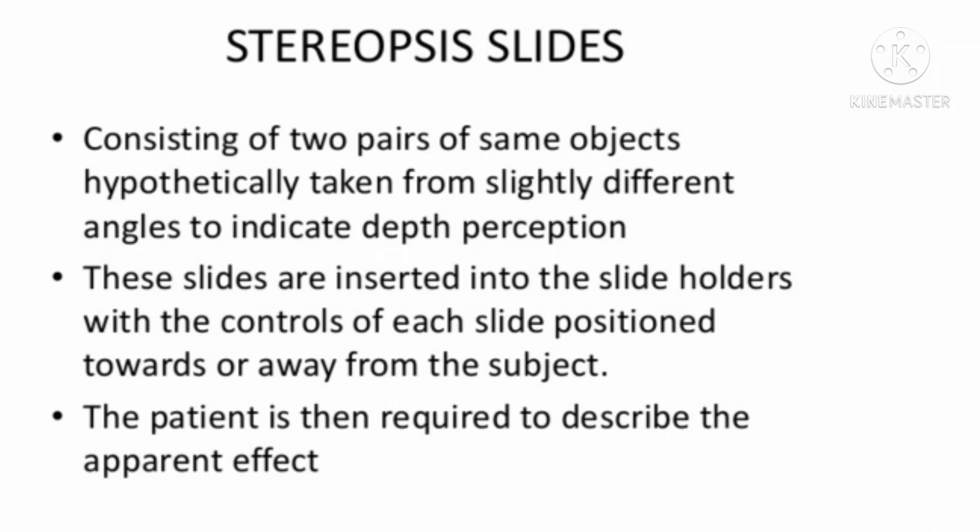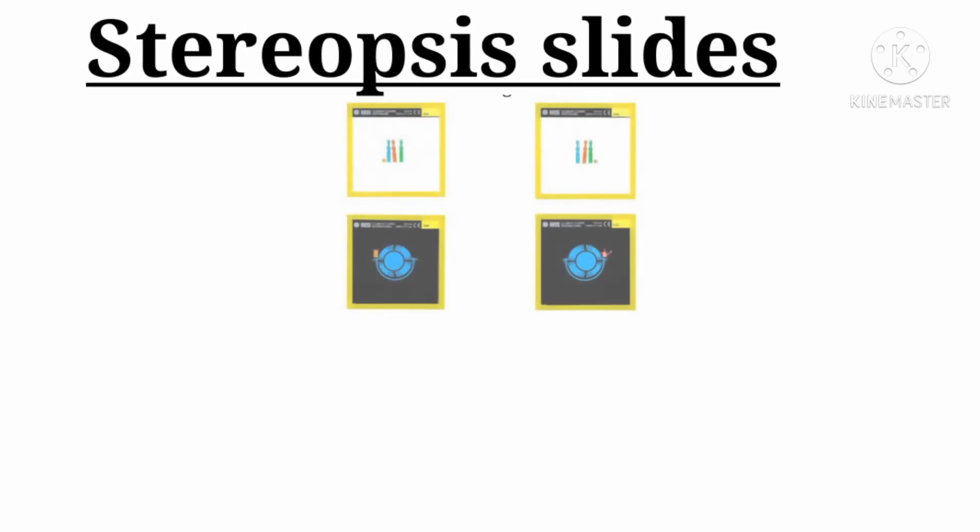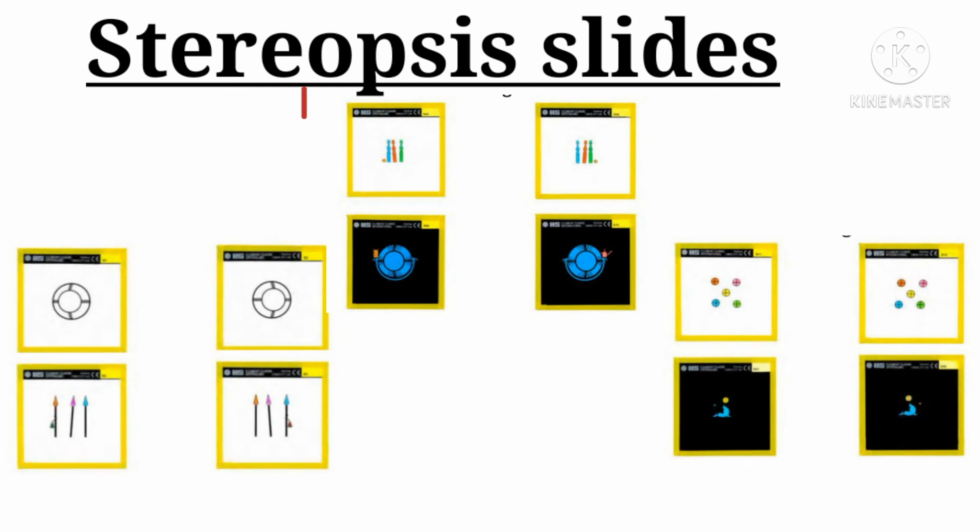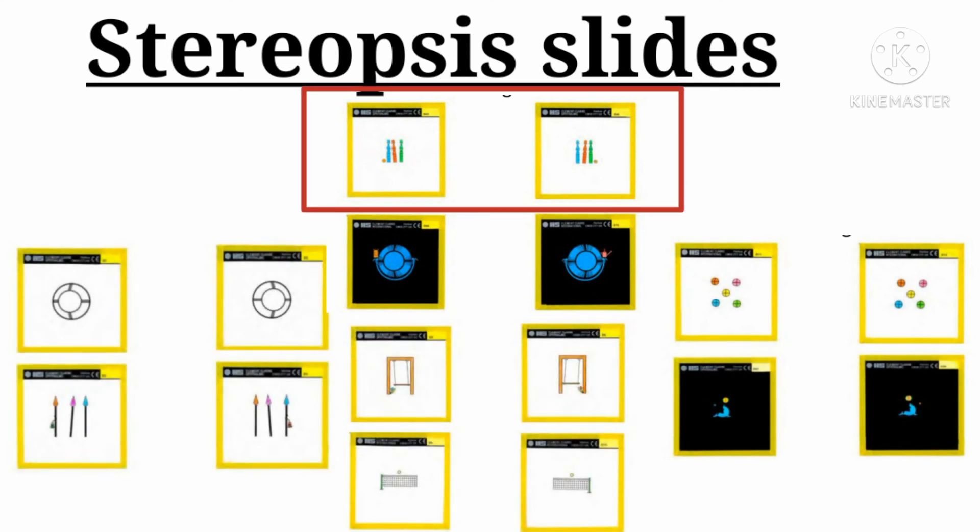Next comes the stereopsis slide. This slide consists of two pairs of same objects, hypothetically taken from slightly different angles to indicate depth perception. These are some of the stereopsis slides.